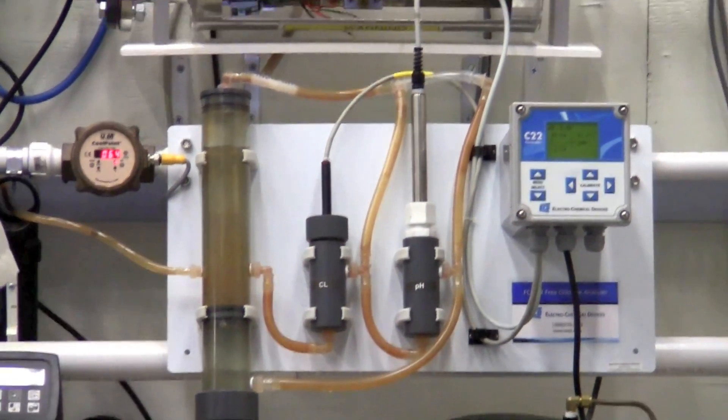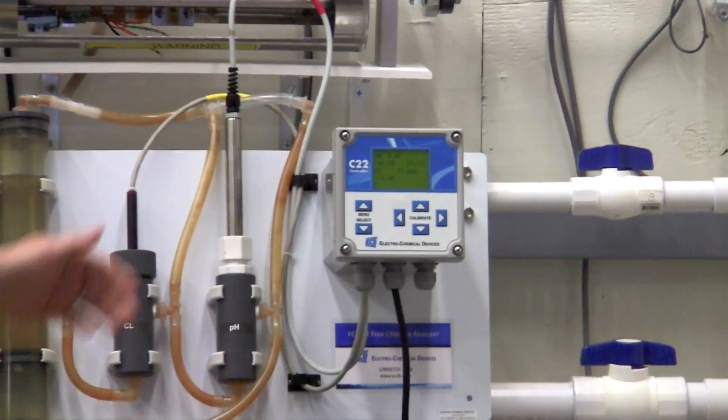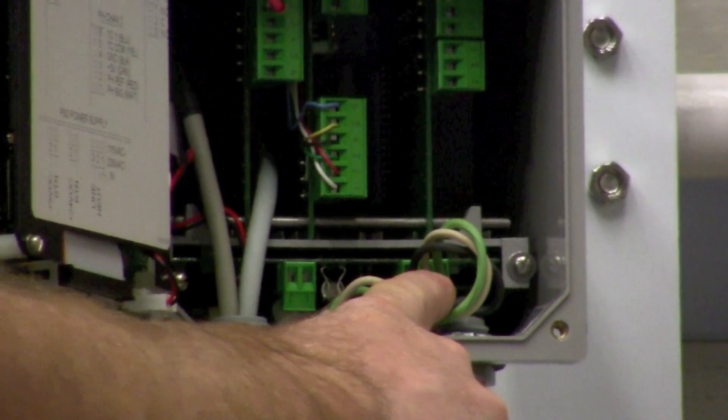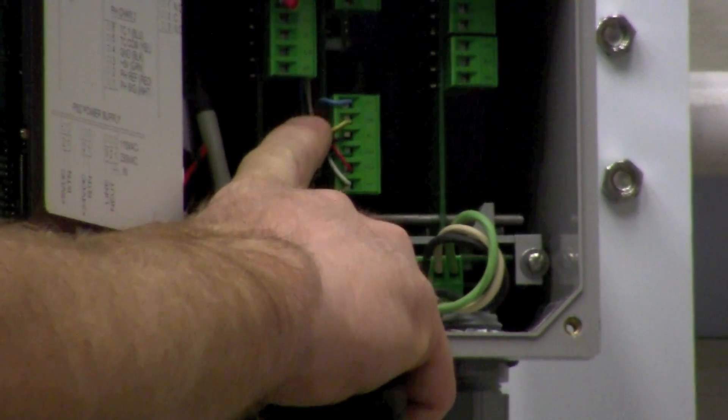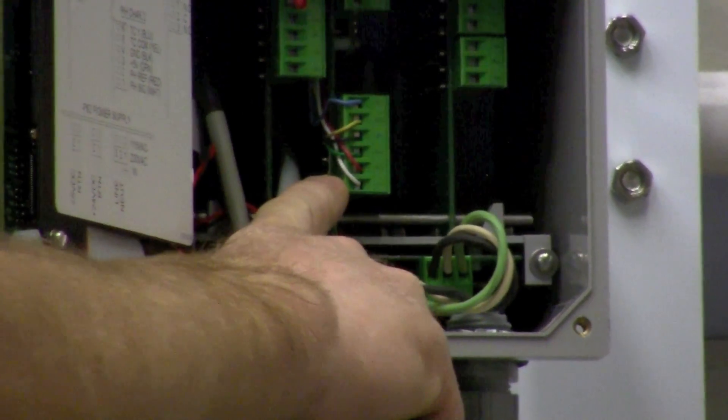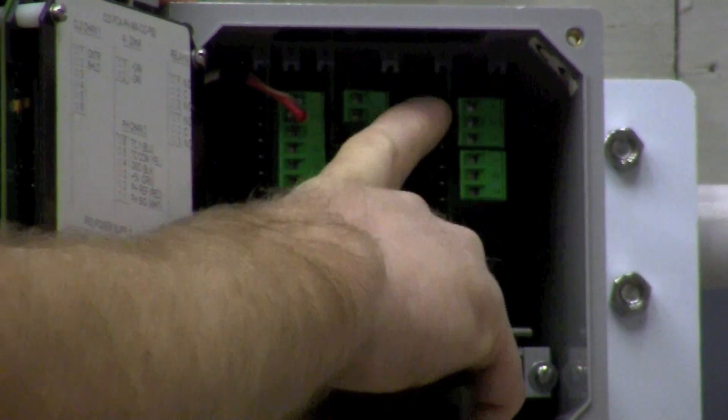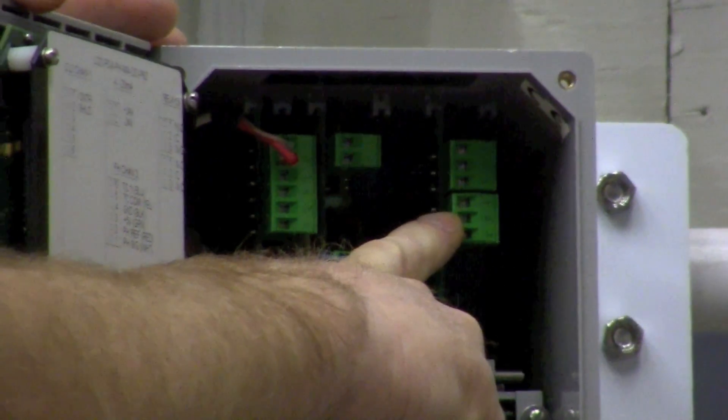The wiring of the system 22 is as easy as connecting the 110 volt power to the terminal block. We've got a pH sensor that's wired into this terminal block, chlorine sensor up here. We've got one 4 to 20 output and we've got two relay contacts.